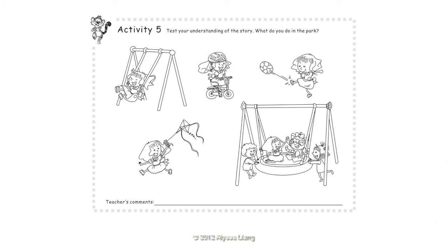Activity 5: Test your understanding of the story. What do you do in the park? I swing. I ride my bike. I kick my ball. I fly my kite. I play with my friends.